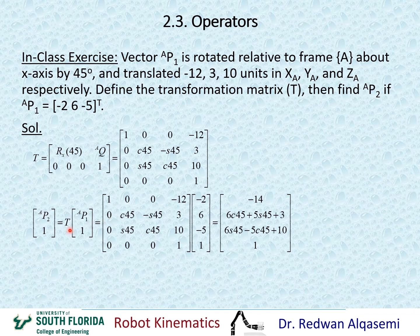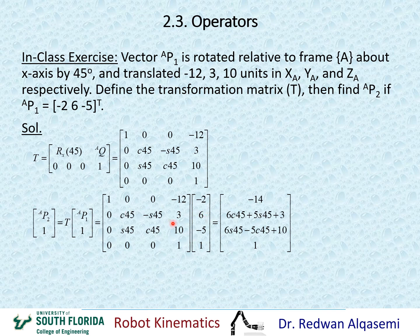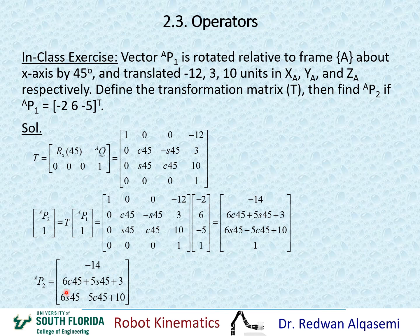Now we construct the equation: P2 relative to A and 1 equals the transformation matrix times P1 relative to A and 1. Substituting the transformation matrix and P1 relative to A — which is [−2, 6, −5] — with 1 appended, and performing the multiplication gives the result. The final answer is only the first three elements; disregarding the trailing one gives P2 relative to A as those three elements of the resulting vector.